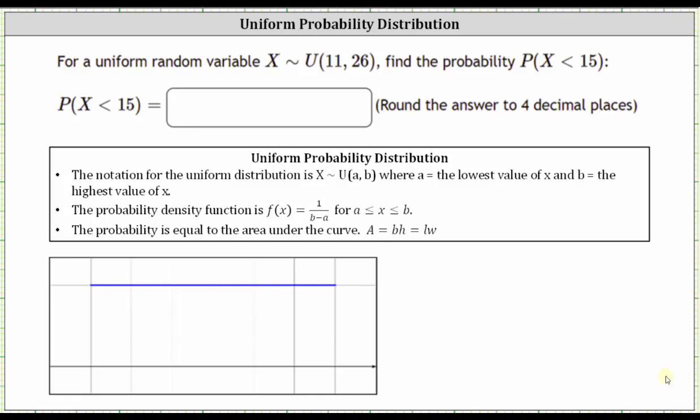This video will show how to determine a probability involving a uniform random variable by hand, and then check the result using desmos.com. We're given the random variable X has a uniform distribution with a minimum of 11 and a maximum of 26. We're asked to find the probability that X is less than 15.